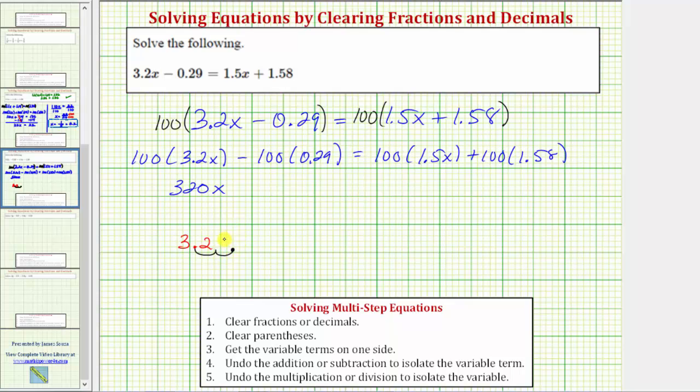and adding a zero for the missing digit, which gives us 320 minus 100 times 0.29 equals 29 equals on the right side. 100 times 1.5x equals 150x plus 100 times 1.58 equals 158.